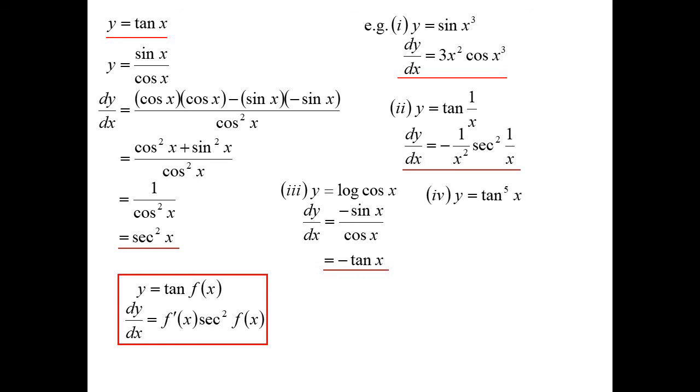Tan to the power of 5, it's a situation of our chain rule because we're really saying tan x all to the power of 5. So bring down the power, 5. Lower the power, 4. Diff the inside. The inside's tan x. Differentiate tan x, you get secant squared. So we get 5 times tan to the power of 4x, sec squared x.